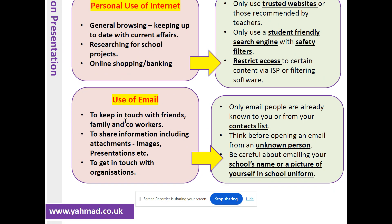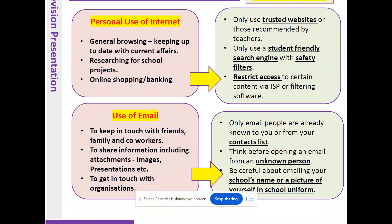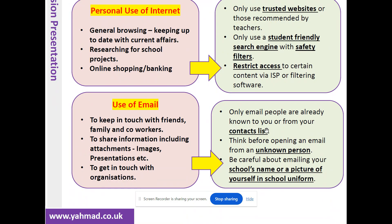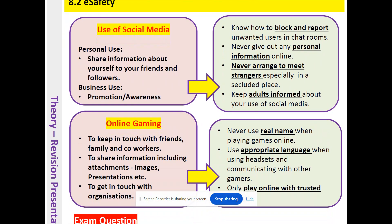Let's look at emails. Why do we use emails? To keep in touch with friends, family and co-workers, to share information including attachments and images, and to get in touch with organizations. To stay safe when using emails, only email people that are already known to you or from your contacts list. Think before opening an email from an unknown person. Be careful about emailing your school's name or a picture of yourself in your school uniform, because if someone receives that information they could find out which school you go to and where you'll be at certain times of the day.